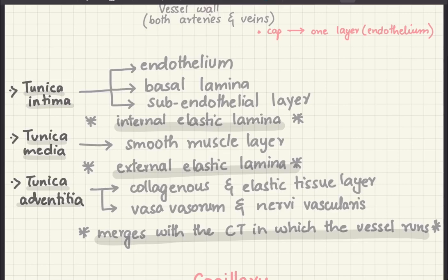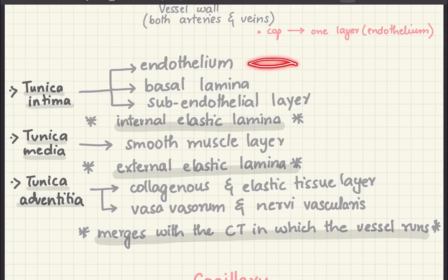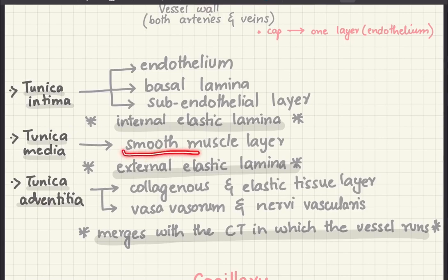The tunica intima is the innermost layer. In the tunica intima we have the endothelium first, which is basically a simple squamous epithelium, then we have a basal lamina and a sub-endothelial layer. In between the intima and media we're going to have an internal elastic lamina, and as I said, arteries are elastic because they have to maintain the pressure in the arterial wall even during diastole.